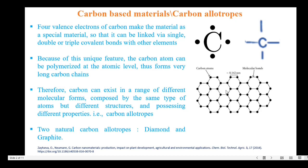Therefore, carbon can exist in a range of different molecular forms composed of the same type of atoms but with different structures, and thus possess different properties. That is called carbon allotropes or carbon polymorphs. The two natural carbon allotropes are diamond and graphite.